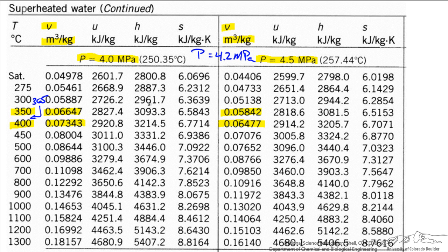Let's make our own table at a pressure of 4.2 MPa. Let's interpolate at 350 degrees C, let's interpolate between this number and this specific volume, and at 400 we'll interpolate between this specific volume and this specific volume. It will give us a table at 4.2 MPa.